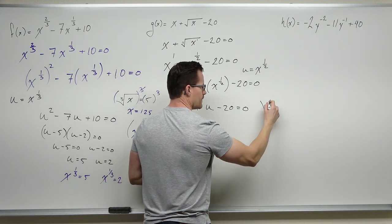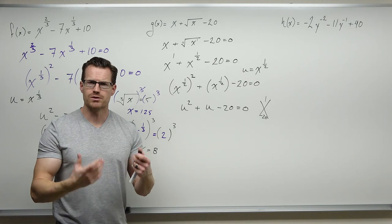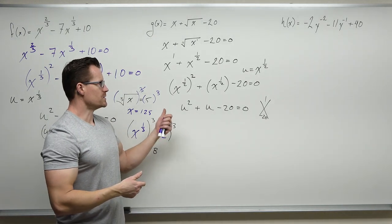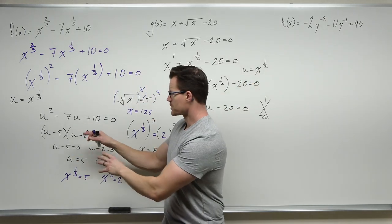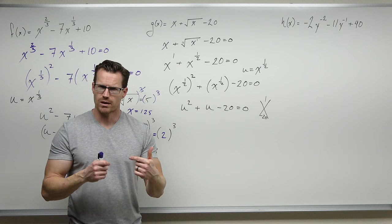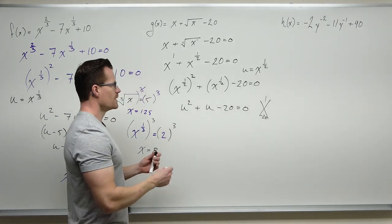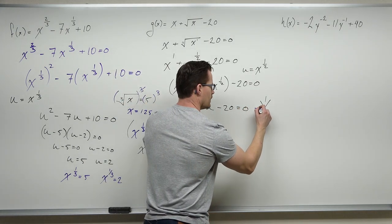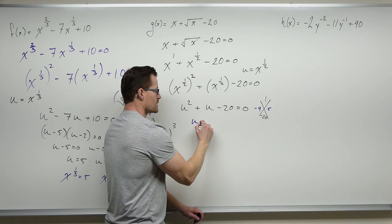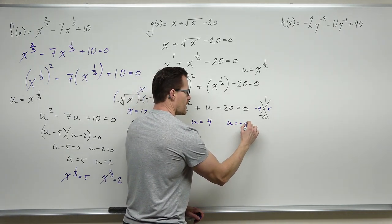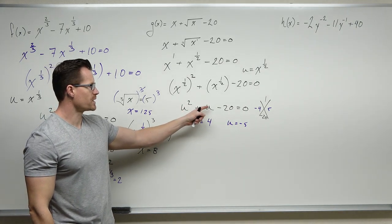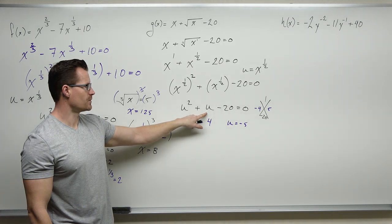We factor u squared plus u minus 20: we need two numbers that add to 1 and multiply to negative 20 — that's negative 4 and positive 5. So u equals 4 and u equals negative 5. We can check: 16 plus 4 is 20, and 20 minus 20 is zero. For u equals negative 5: 25 minus 5 is 20, minus 20 is zero. Those are solutions in terms of u. Now we have to go back to x.